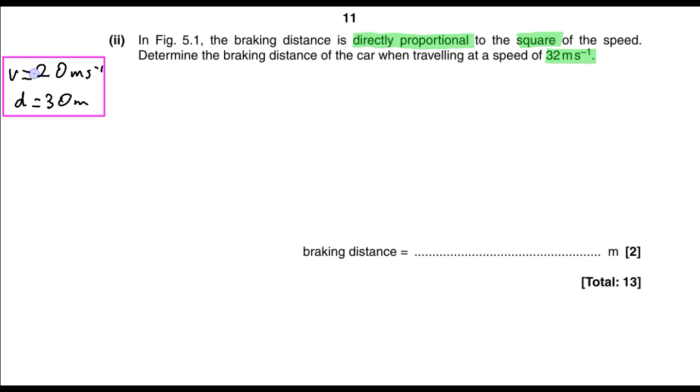In the previous part of the question, we found that when the car travels at 20 meters per second, the braking distance is 30 meters. We will need this information in a minute, but first let's write the direct proportion as a mathematical relation.